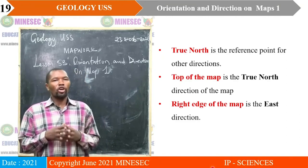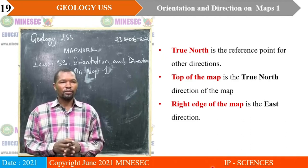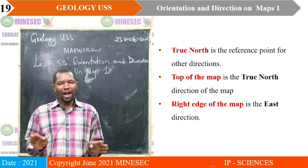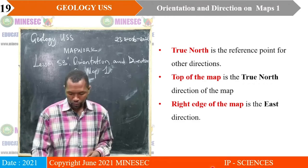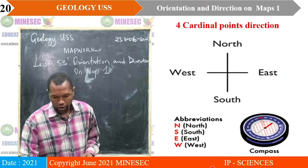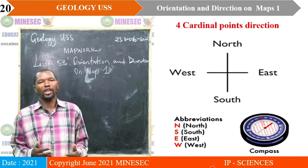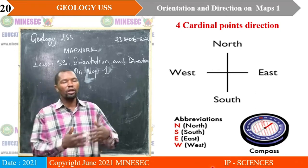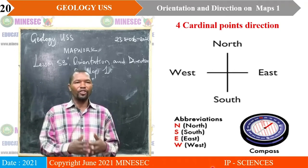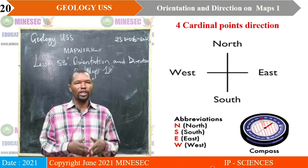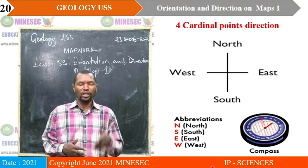The top of the map is the true north direction of that map, so it helps you know the reading position and how to position paper in order to present information. The right edge of the map is the east direction. Those are essential elements that we need to know. We proceed to look at the different cardinals, remembering that one of our objectives was to locate and give direction of features on the map using the four, eight, and sixteen cardinals.